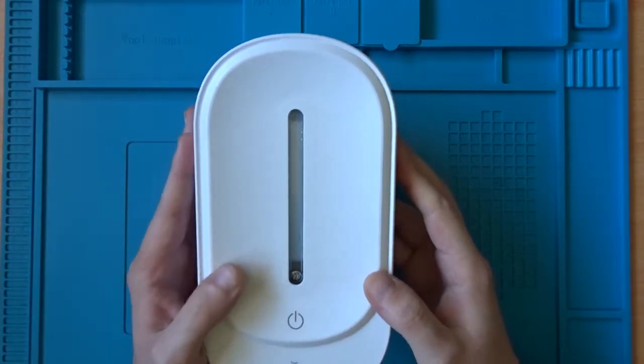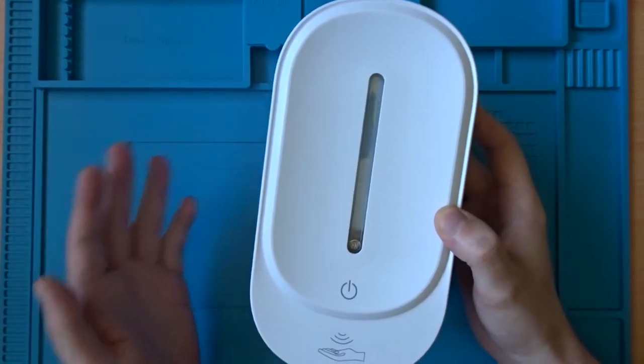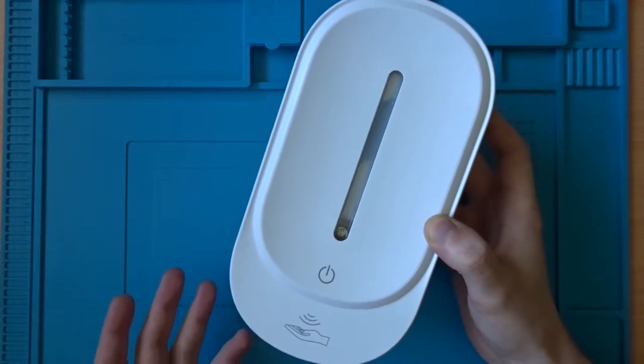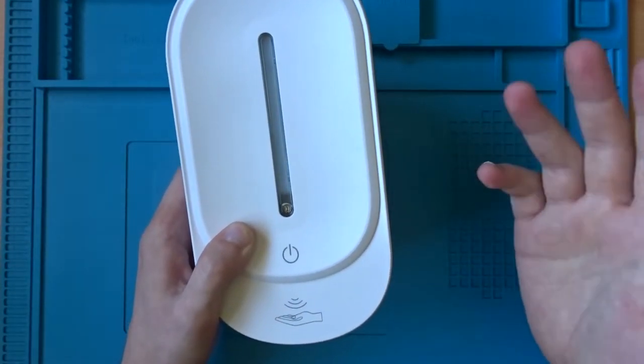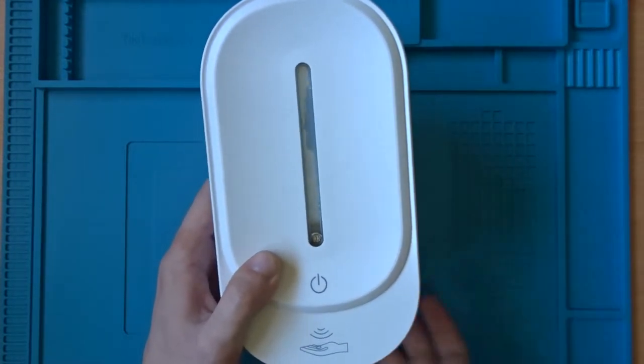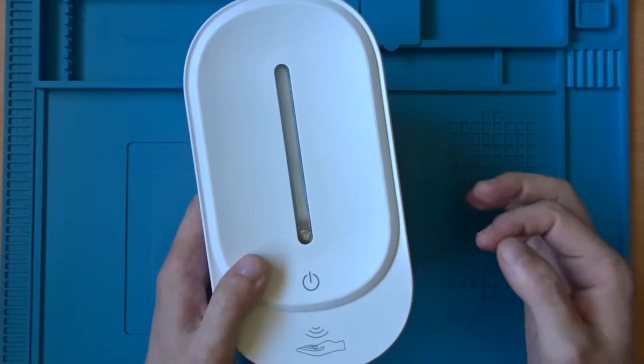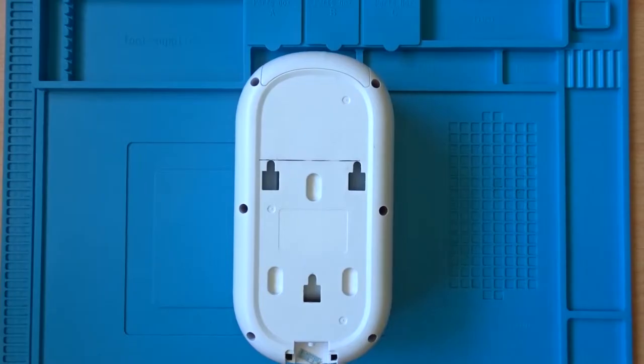What I have here is a contactless hand soap dispenser. Usually what's supposed to happen is you put your hand under it, the light comes on and it dispenses soap out of the bottom. But unfortunately on this device it's no longer dispensing soap. As you can see it still lights up, but that's all that's happening. So I'm going to see if I can open it up, take a look inside and see if I can fix it.